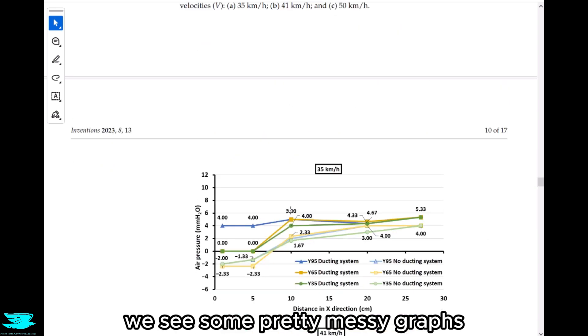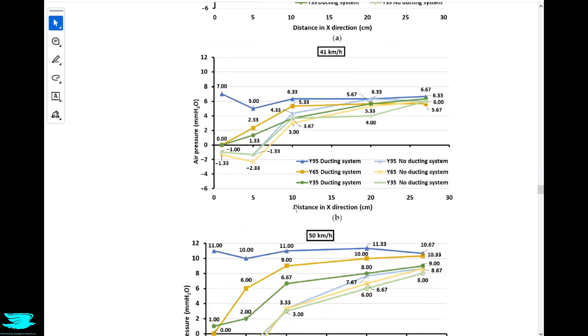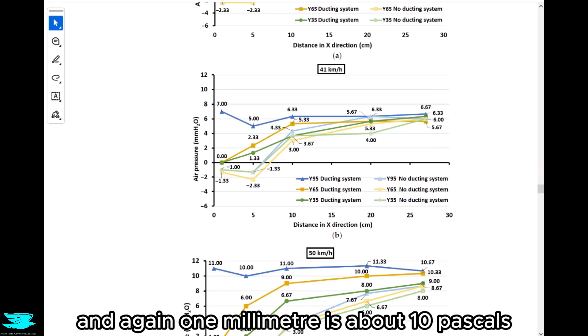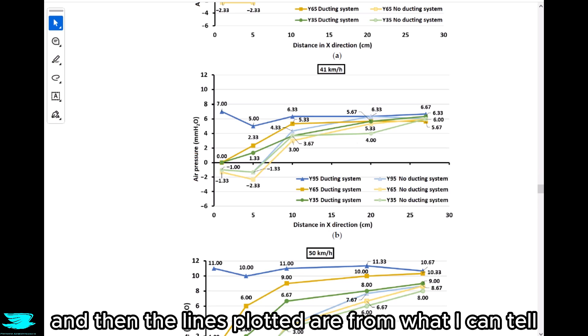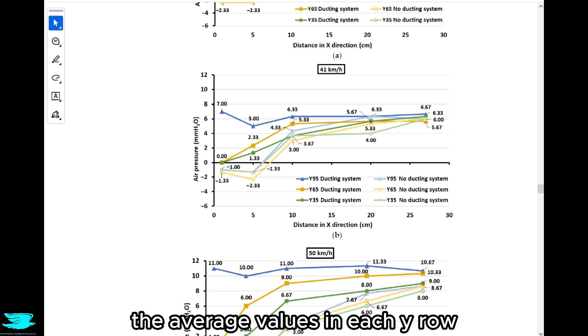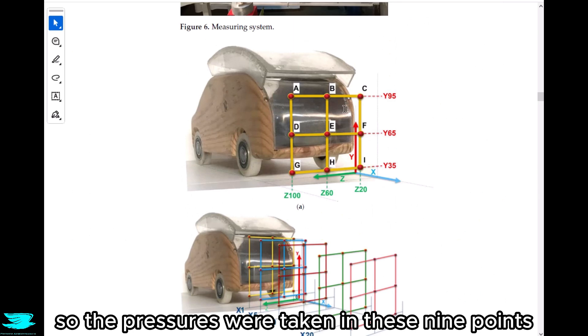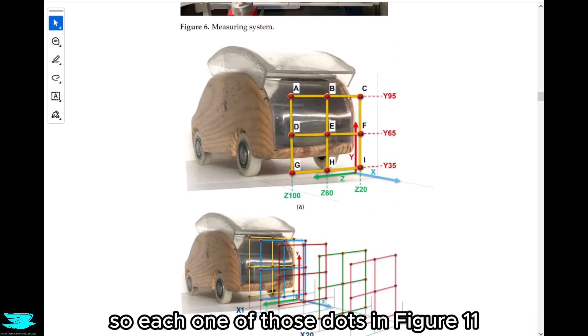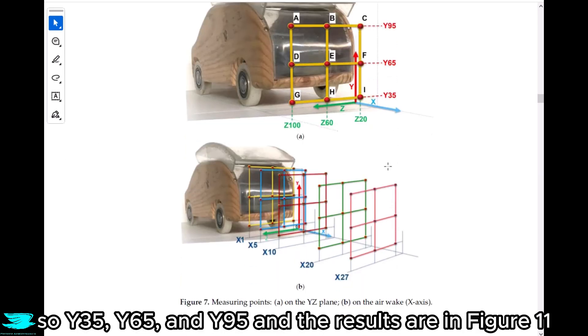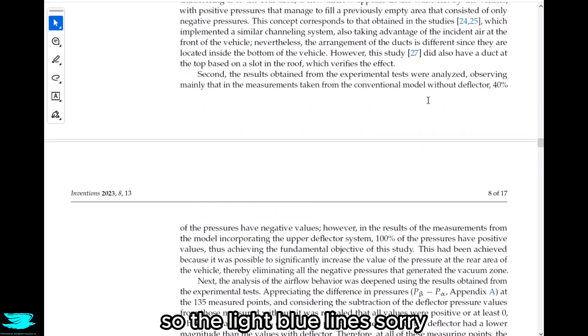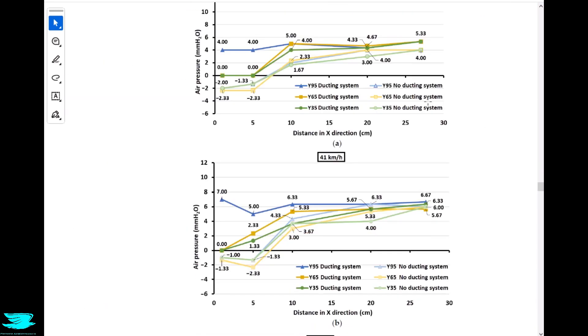Now moving to figure 11, we see some pretty messy graphs, but let's go through them. In the x-axis, that's the x distance downstream, the vertical planes. The y-axis is again pressure in millimeters of water, and again one millimeter is about 10 pascals. The lines plotted are, from what I can tell, the average values in each y row. So back in figure 7, remember the grids we saw? The pressures were taken in these nine points. Each one of those dots in figure 11 corresponds to the average in each row: y35, y65, and y95. The light blue, yellow, and green correspond to no ducting. The solid lines are for ducting. Across the board, it's clear that the ducting for all three velocities are really increasing the pressure in the wake.